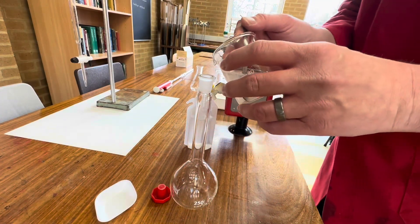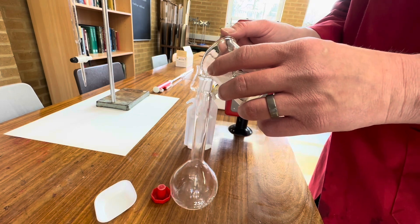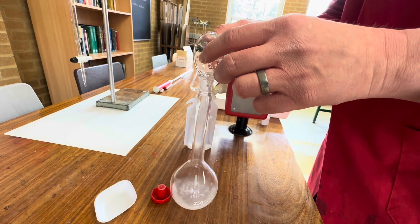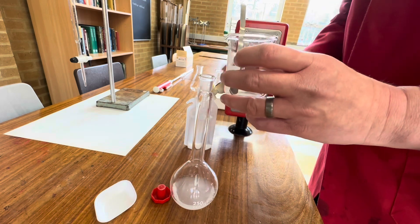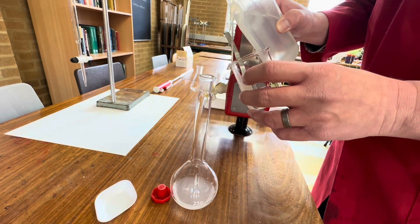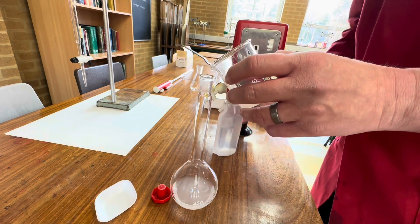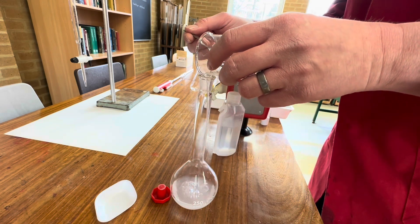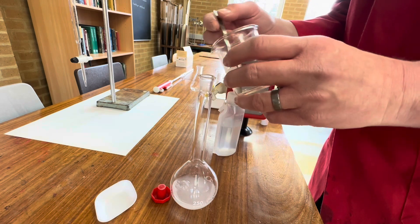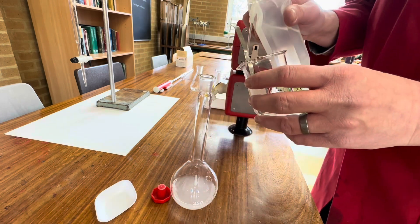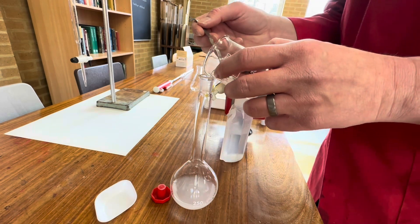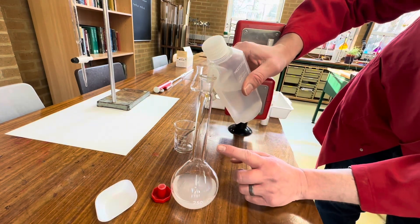Now we're going to carefully add it to our volumetric flask. And we're going to rinse it in. So we're just going to add a little bit more water, because we want to make sure that any undissolved carbonate has gone in too. And we're going to measure it up to 250.